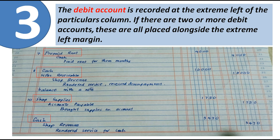Next, the debit account is recorded at the extreme left of the account titles column. If there are two or more debit accounts, they are all placed alongside the extreme left margin with no indention. Notice the red-boxed accounts — they are the debit accounts, written flush to the left with no indention. If there are two or more debit accounts, they are written at the same level, aligned together.